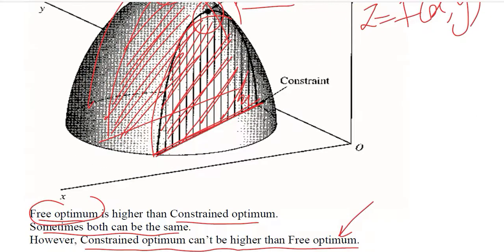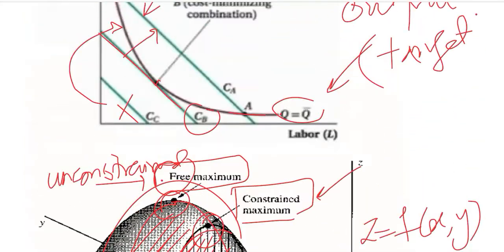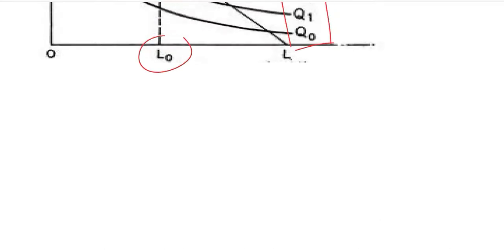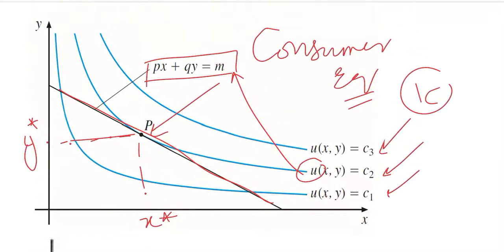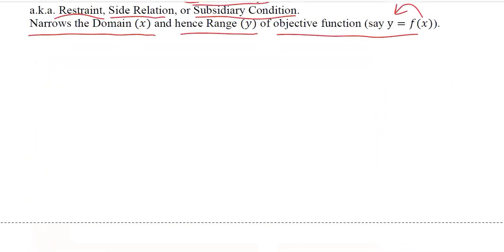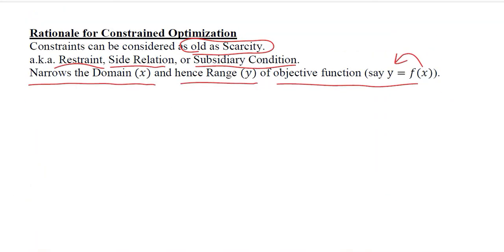So this was a little introduction to the constraint optimization process in which we considered some diagrammatical depiction of it and also some economic situations where we confront the constrained optimization. And in the next video we will learn about the mathematical process of executing the constrained optimization. Thank you.